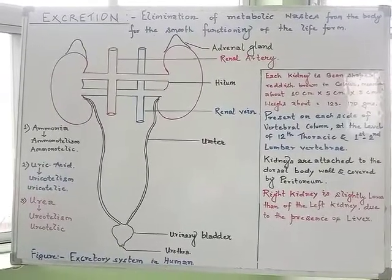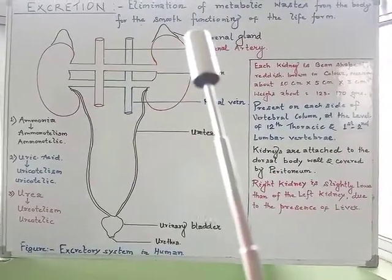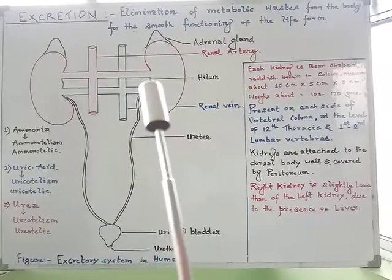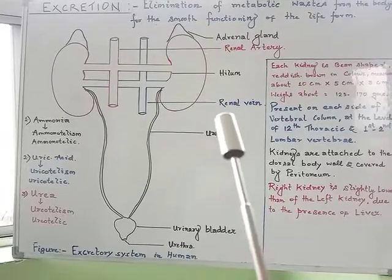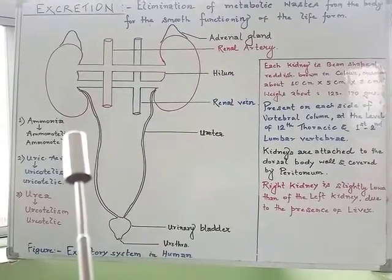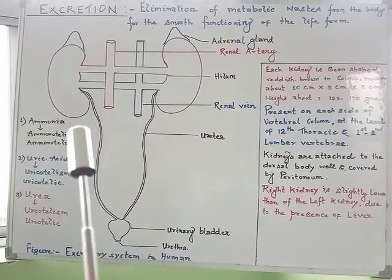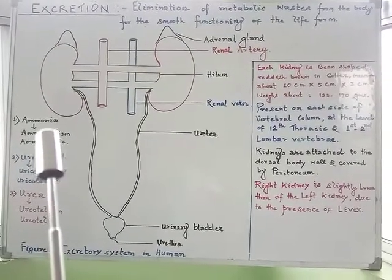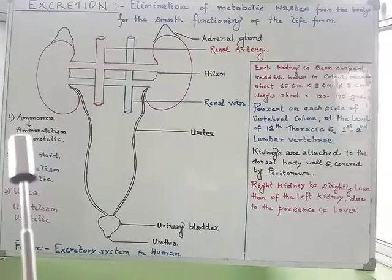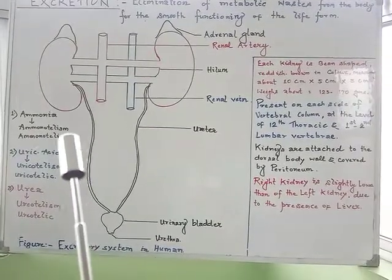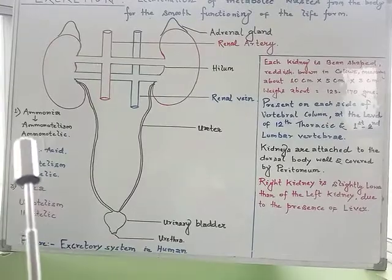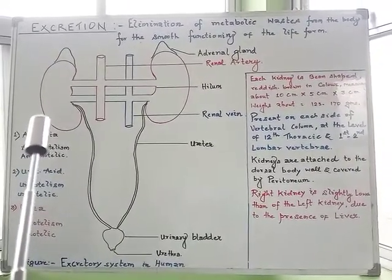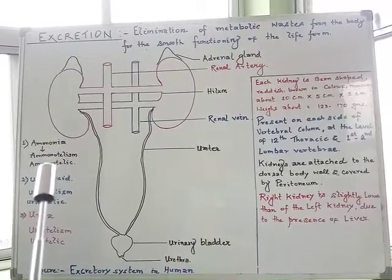Before discussing the human excretory system, let us understand the different types of nitrogenous waste products formed in animal species depending upon their habitat and groups. Certain animals release their nitrogenous waste product in the form of ammonia. As ammonia is highly toxic, its removal requires a large amount of water. This mode of excretion is known as ammonotelism and the animals are called ammonotelic animals — for example, teleost fishes, tadpoles of amphibians, soft-bodied aquatic invertebrates, and crocodiles.